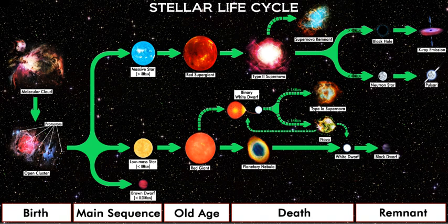These may result in extreme horizontal branch stars, hydrogen-deficient post-asymptotic giant branch stars, variable planetary nebula central stars, and R Coronae Borealis variables.